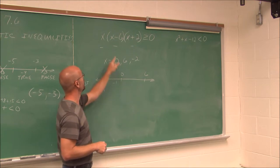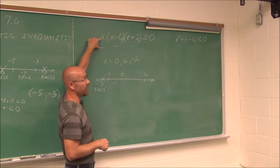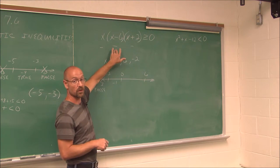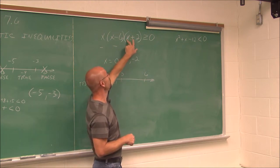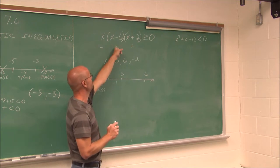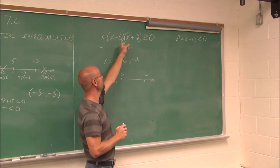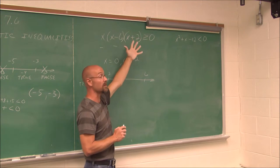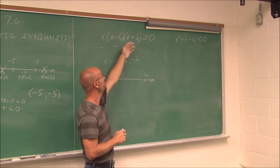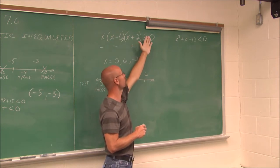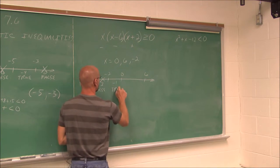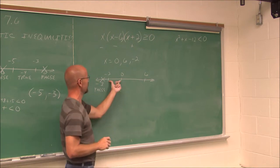If I test negative 1, this first factor would be negative. Negative 1 plus negative 6 is also negative. But negative 1 plus 2 would be a positive value. A negative times a negative is positive, times a positive is positive. Two negatives — an even amount — gives a positive when we multiply. Positive values are greater than 0, so since this is greater than 0, this interval is true.